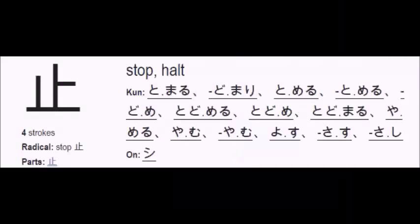The third kanji is Stop, Tomaru — To of Tomaru, which means to halt. This is one of the easiest kanjis in this lesson. It has 4 strokes: 1, 2, 3 and 4. The Kunyomi readings of this kanji include To, Do, Todo, Ya, Yo, and Sa. The Onyomi reading is Shi.